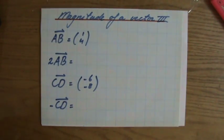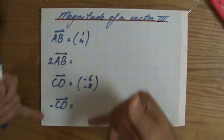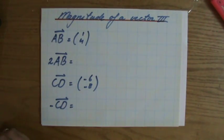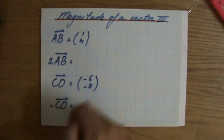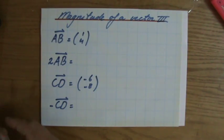Good, last example video about calculating the magnitude of a vector. So the question for all four is: what is the magnitude of the vector AB (1, 4), then 2AB, and CD (-6, -8), and then minus CD.